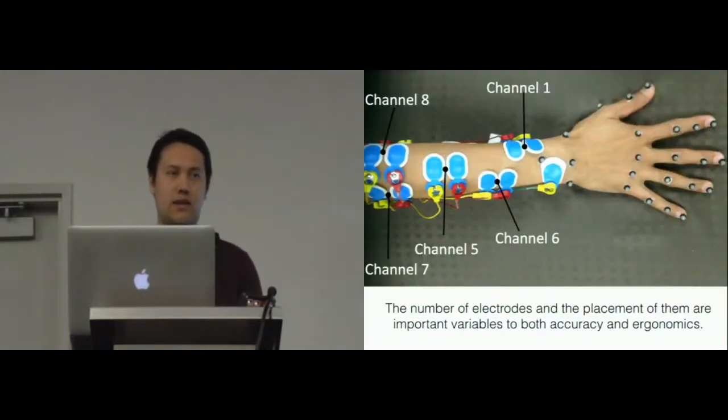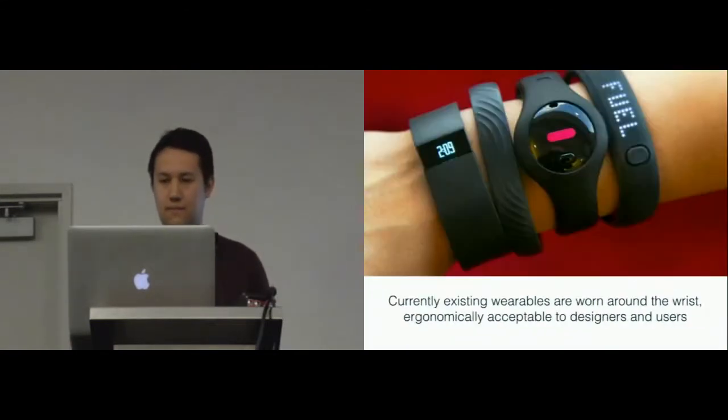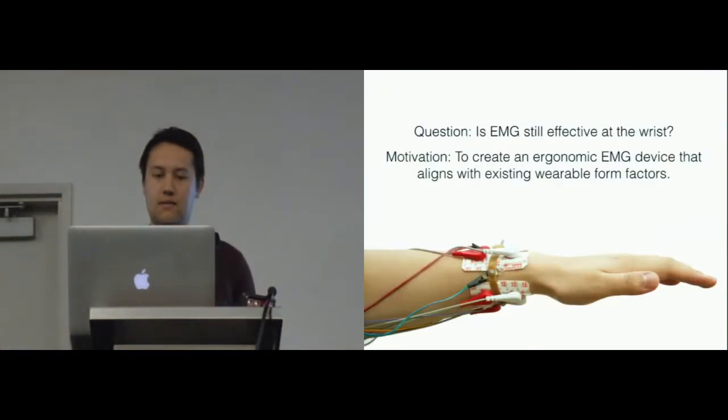The number of electrodes and the placement of these are important variables to both the accuracy and the ergonomics of the device. However, currently existing wearables are worn around the wrist, which are ergonomically acceptable to designers and users. So given this, we decided to find out whether EMG could still be used effectively at the wrist, so that it can be aligned with existing wearable device form factors.